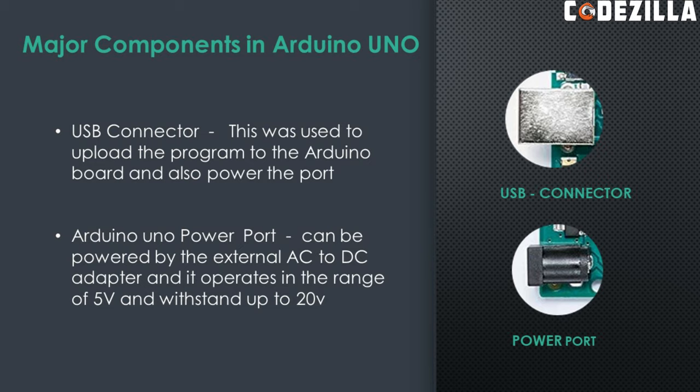Arduino also has a power port. It can be powered by an external AC to DC adapter or battery, and it operates in the range of 5V to 20V. In case of high rising voltage, the voltage regulator plays a major role in preventing damage to the Arduino board.